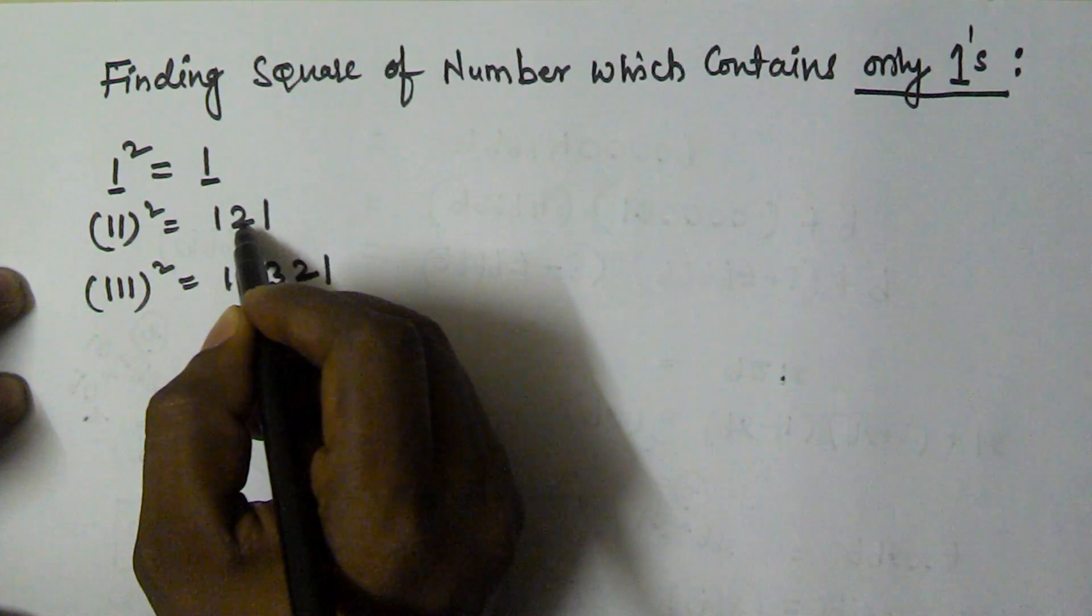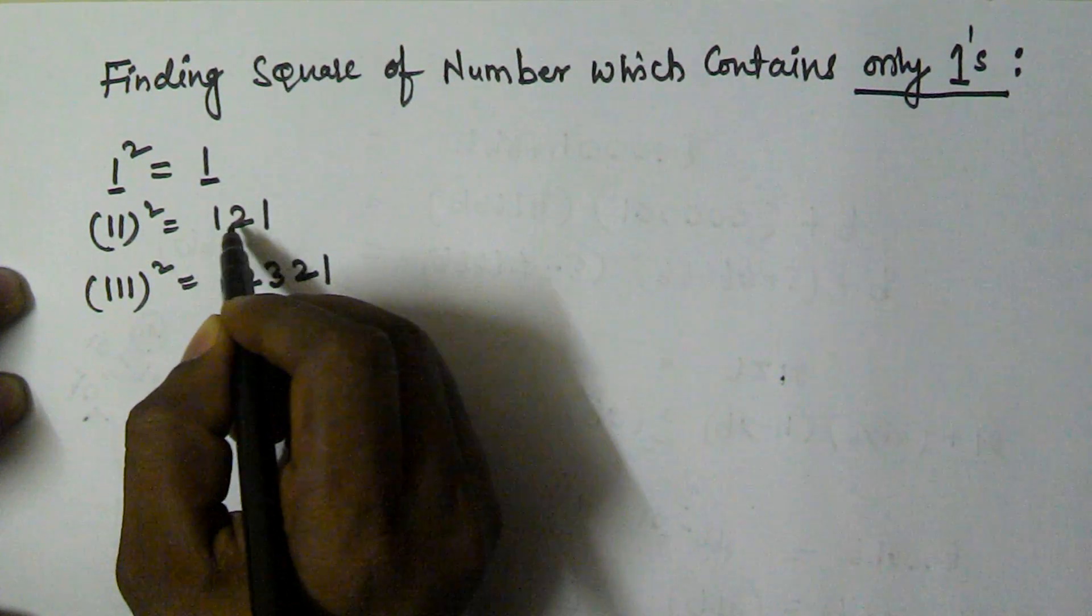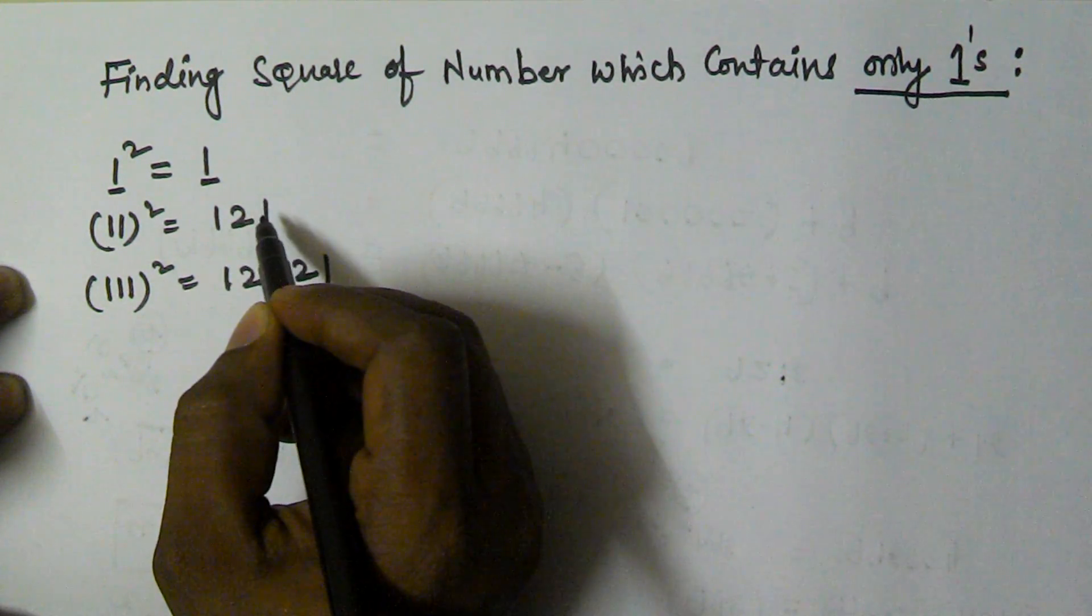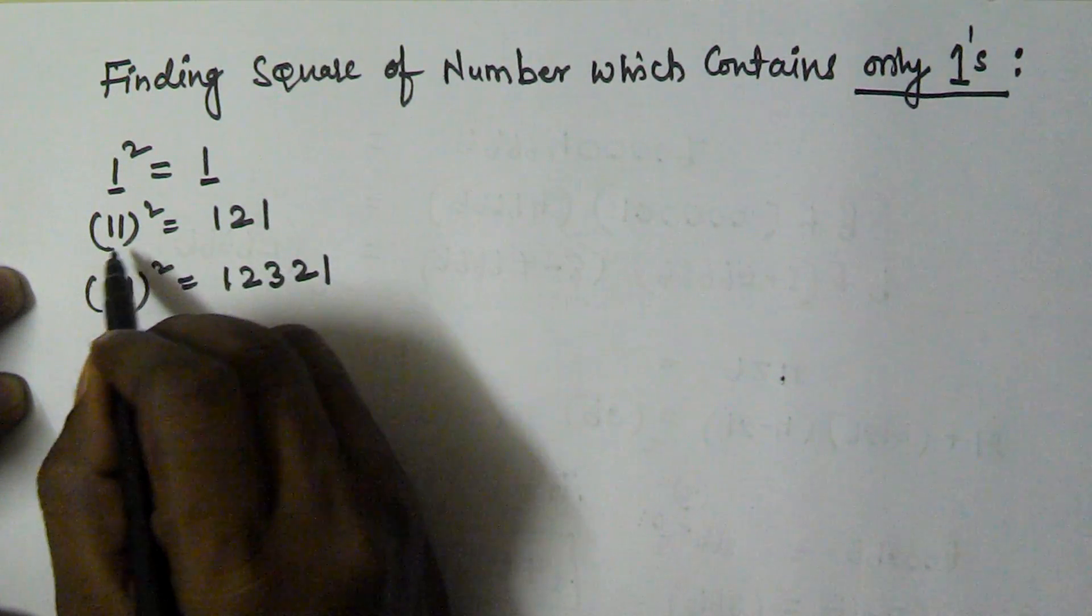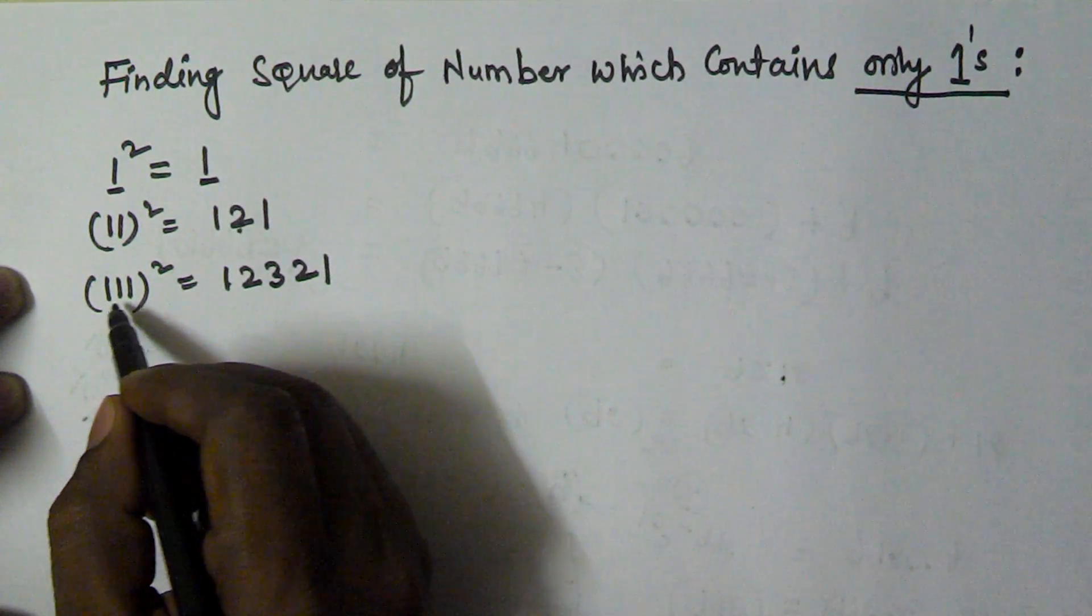...increase up to 2. It contains 2 digits, that's why I increase from 1 to 2, and then decrease until 1. So the value of 11² is 1, 2, 1. Now let's take 111².